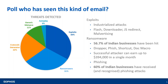It would be a bit tough to believe, but India is the third largest ransomware attack country in Asia and fifth in the world. 60% of Indian businesses have received and recognized phishing attacks, and 99% of ransomware attacks happen through a spam mail or a phishing mail.